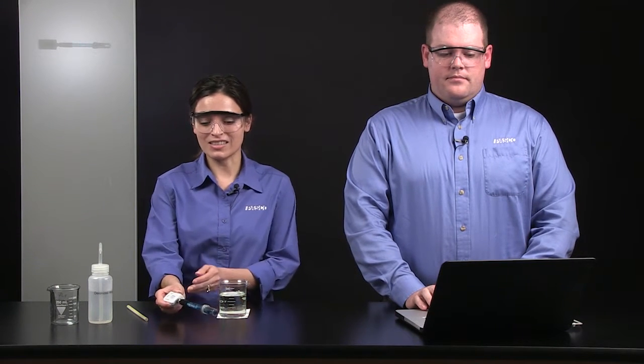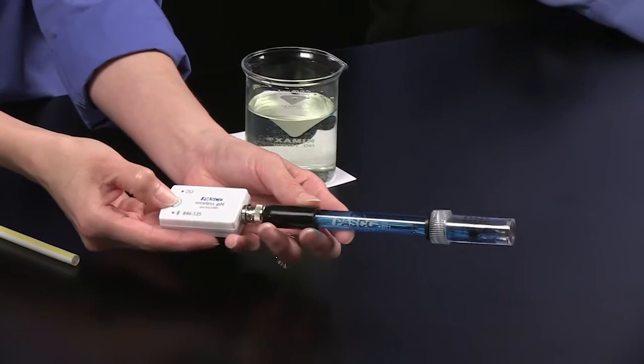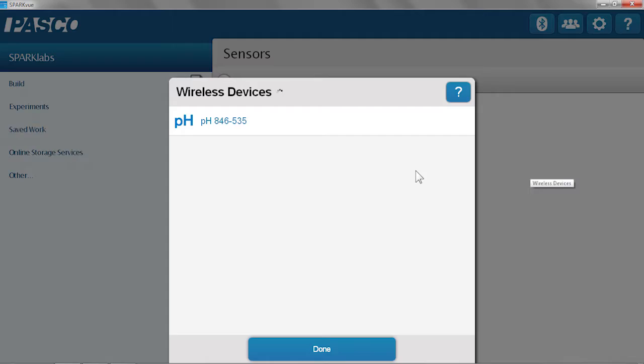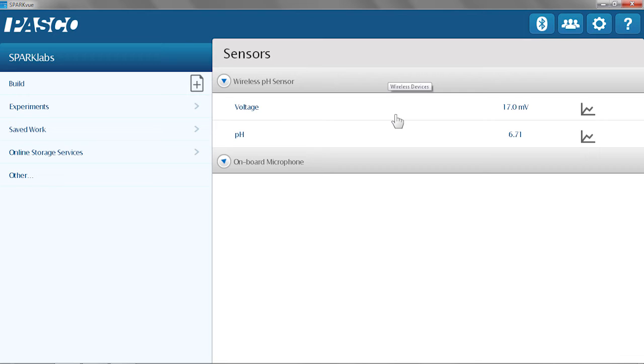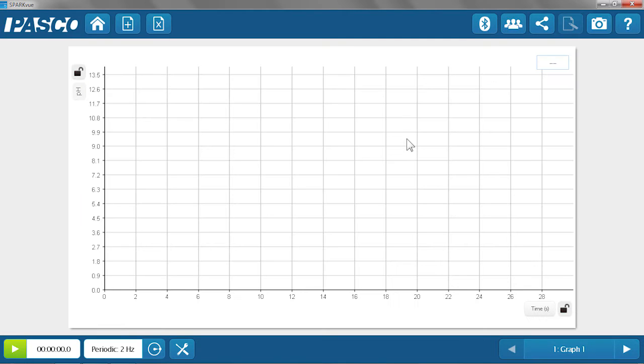First, we're going to connect the sensor. I'm going to turn it on. I'm going to launch the Bluetooth menu to look for wireless devices, and then select the pH sensor from the list. And when it's connected, it flashes green. From the sensors list, we can now select the pH measurement, and it will launch into a graph display.